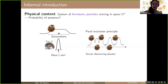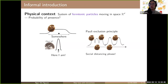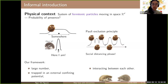The more the probability of presence is concentrated, the more probable you have your particle there. Fermionic particles have the property that they cannot occupy the same quantum state, by the Pauli exclusion principle. So you cannot expect to have these fermionic particles in the same place unless you force them to. We want to understand what happens when you take a large number tending to infinity, add some interaction between them, and trap them together in a confining potential.